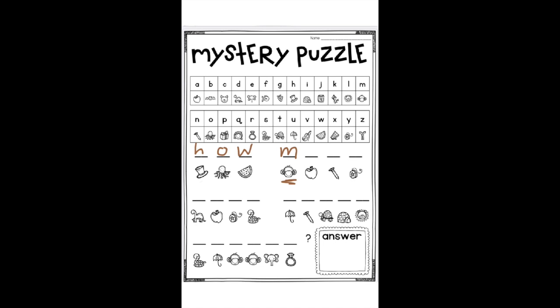Now, you keep going on your own and when you solve the puzzle, it's going to ask you a question. You can see there's a question mark right here. It's going to ask you a question and you will have to write the answer in this box. Go ahead and send a picture of your answer and your mystery puzzle to your teacher. We can't wait to see it.